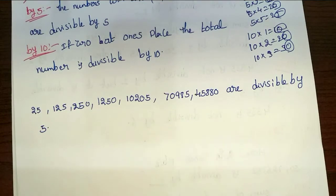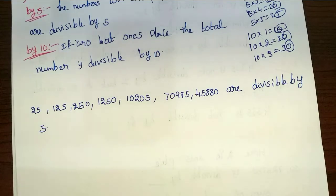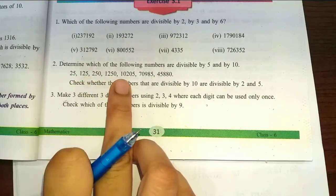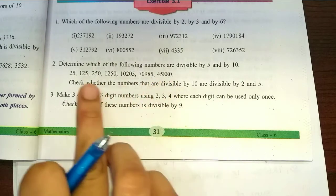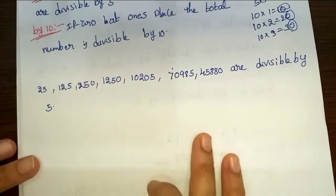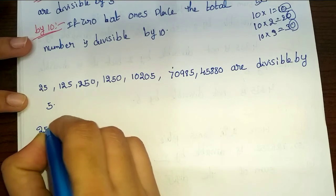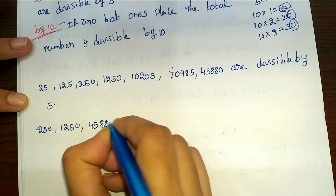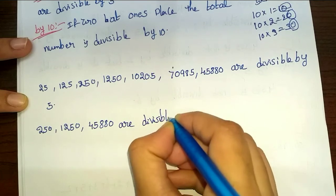So for divisibility by 10, the last digit must be 0. Numbers: 1020, 1250, 4580 are divisible by 10, as their last digit is 0.